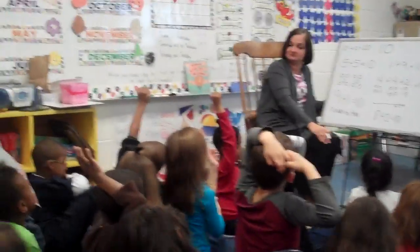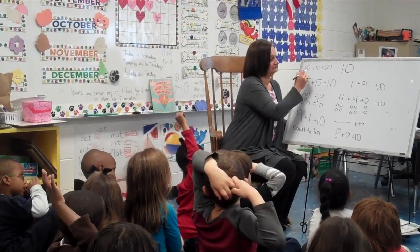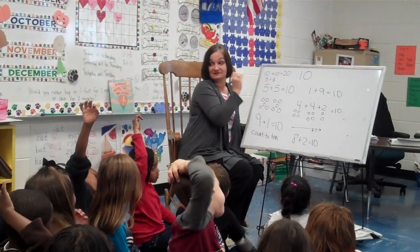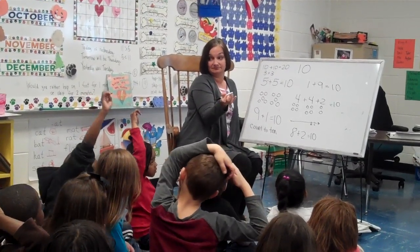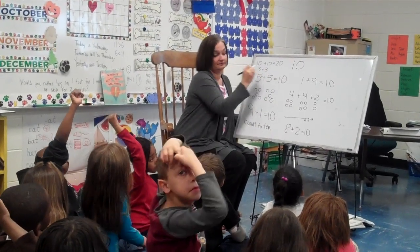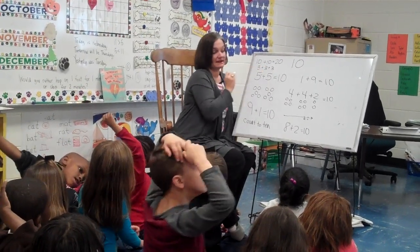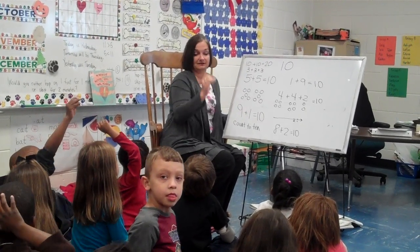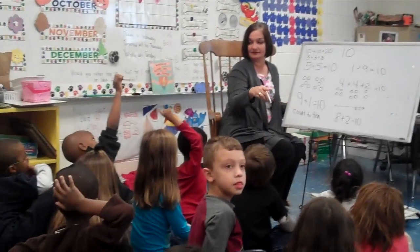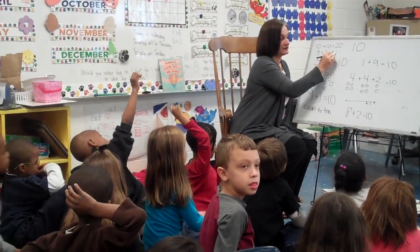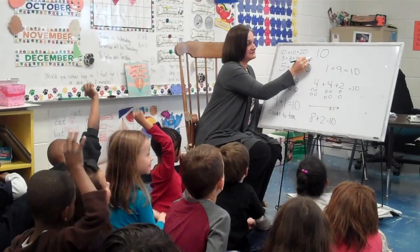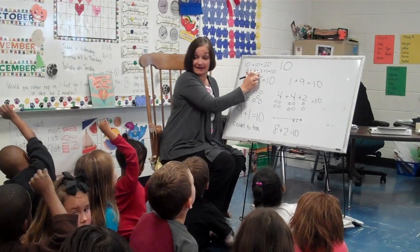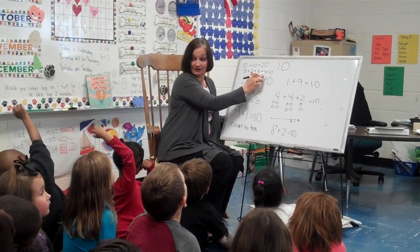Anna? 3 plus 3 plus 3. What is 3 plus 3? 6 — it's a double. So we've got 6. Plus 3 more — that's 9. If you have one more, it's 10. One more is going to give us 10. 3 plus 3 is 6, plus 3 more is 9, plus one more is 10.